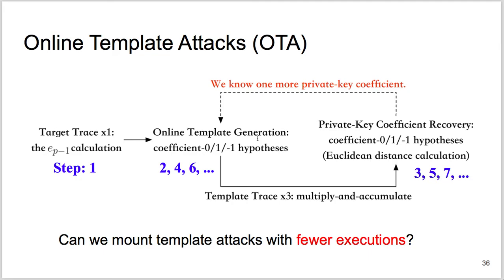In online template attacks, we acquire the single target trace first. We then partition this target trace into pieces. Each piece corresponds to one multiply and accumulate. Then we start to generate three template traces for the first private key coefficient recovery. They indicate the private key coefficient to be 0, 1, and minus 1. Online template attacks would then compare the first piece of the target trace with each of the three template traces. The closest template trace in terms of Euclidean distance gives us the optimal guess. We then update this guess to our knowledge, and according to this knowledge, start to generate the next three template traces for the second private key coefficient recovery, and so on.